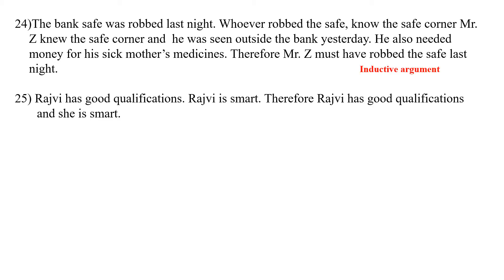Now we come to the next. Rajvi has good qualifications; Rajvi is smart; therefore Rajvi has good qualifications and she is smart. Here the conclusion is implicitly present in the premise and the premises provide sufficient evidence for the conclusion. So this argument is of deductive type.